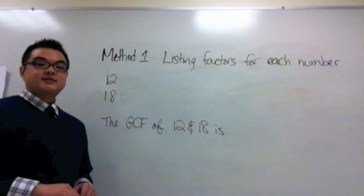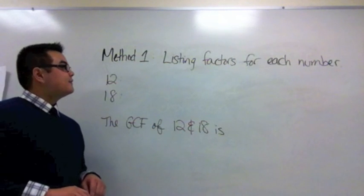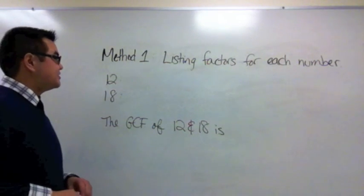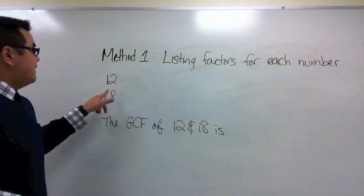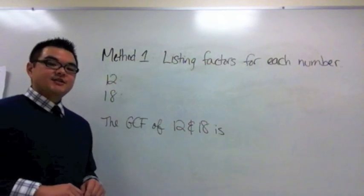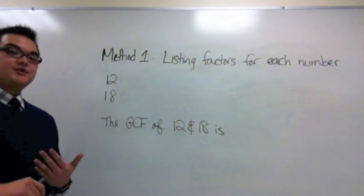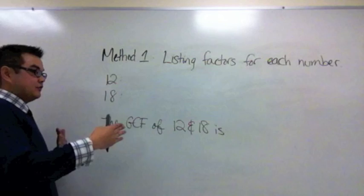There are three methods to finding the GCF of two numbers. The first method is listing factors for each number. For 12 and 18 if I wanted to find the GCF I would list the factor pairs for each number in least to greatest order.